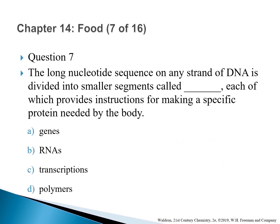Question 7: The long nucleotide sequence on any strand of DNA is divided into smaller segments called blank, each of which provides instructions for making a specific protein needed by the body. The correct answer is A — genes. The segment of a nucleic acid that codes for a specific protein is called a gene.